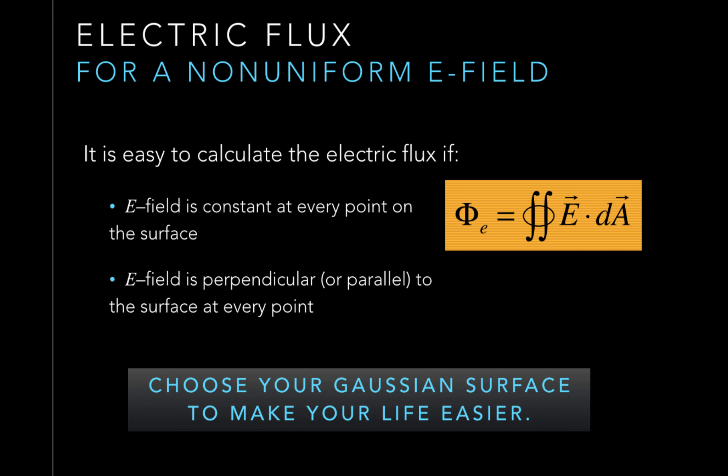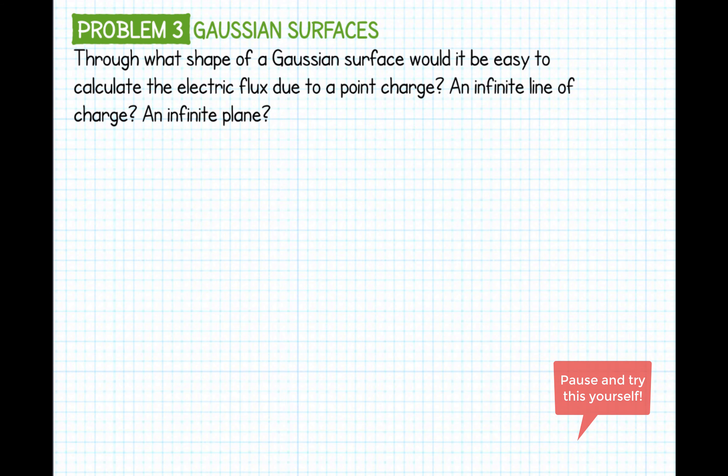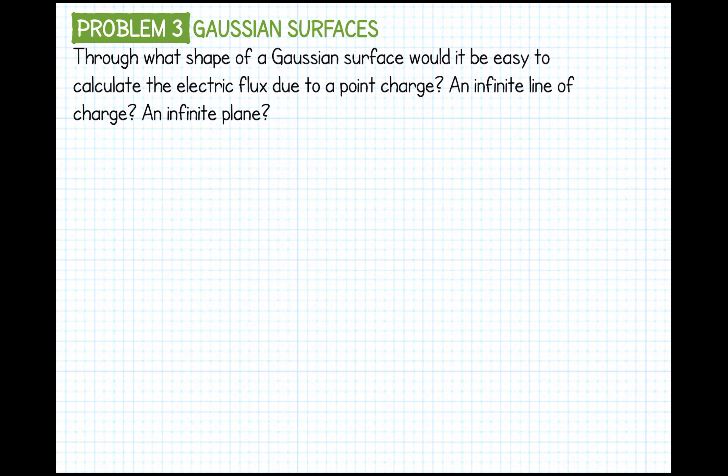So here's where the hands-on activity comes in. I want you to make these shapes: take a point charge and make the Gaussian surface you'd put around it; make a line charge and create the Gaussian surface for it; make a plane and create the Gaussian surface for that. This includes the constraints — you want the electric field to be either parallel, giving a dot product of zero, or perpendicular with the electric field constant.